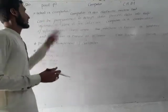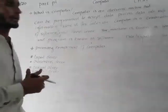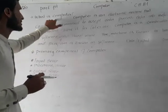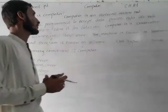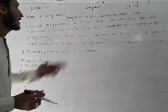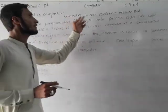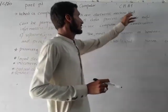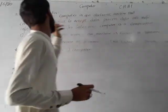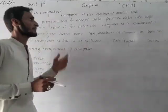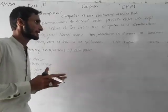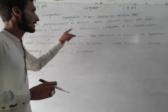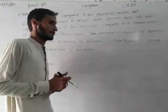What is a computer? A computer is an electronic machine that can be programmed to accept data, process data into useful information, and store it for later use.